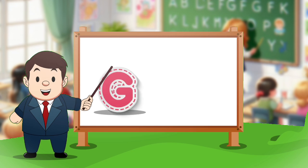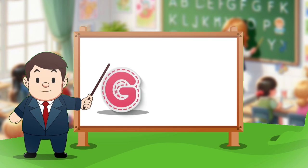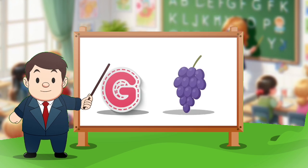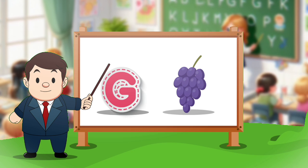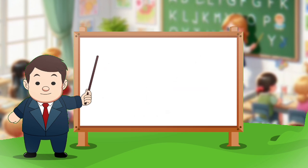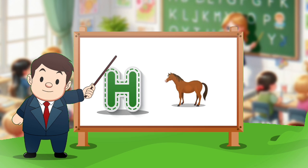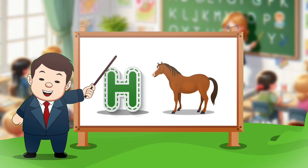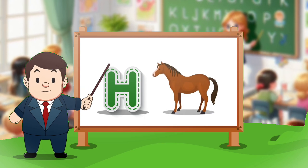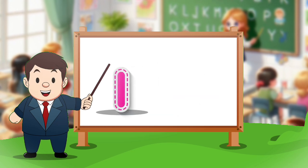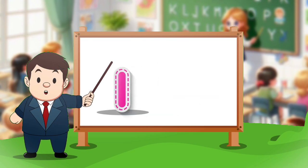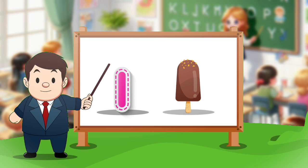G. G for crab. H. H for horse. I. I for ice cream.